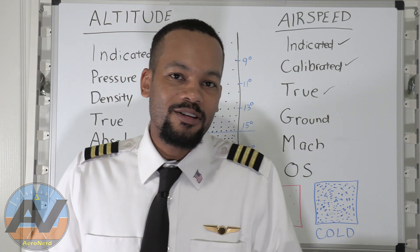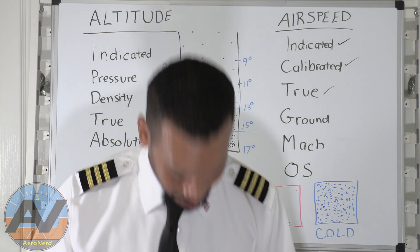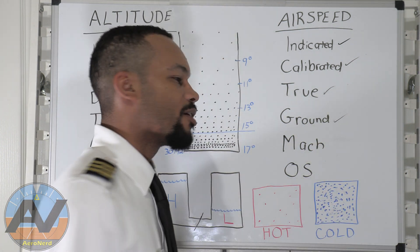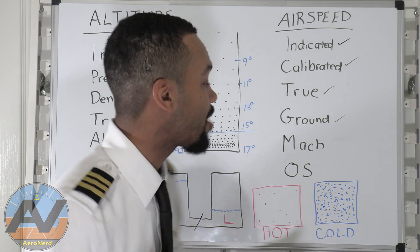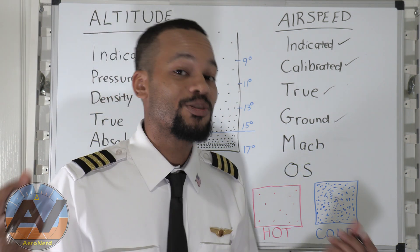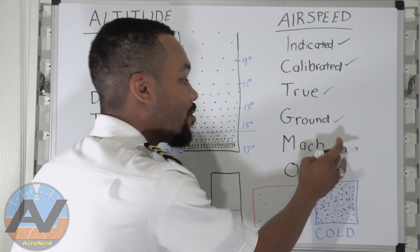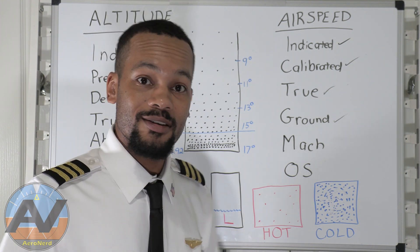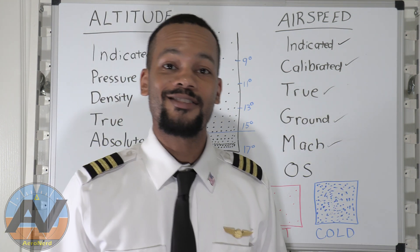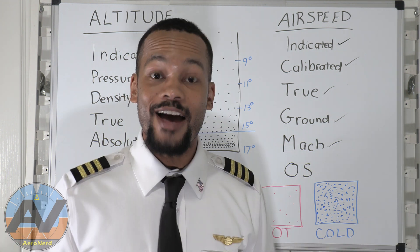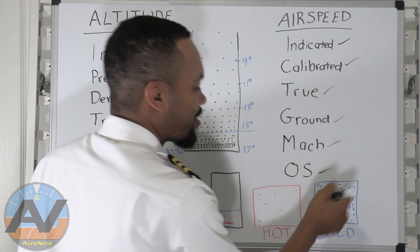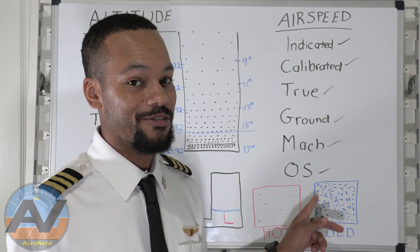Ground speed is literally the easiest to explain — it's the speed at which you're going over the ground. Mach is the speed of sound: Mach 1 is the speed of sound at the proper temperature, and Mach speed does change according to temperature. Mach 2 would be twice the speed of sound. The OS airspeed is the one telling you you're going too fast, too slow, or about to stall — so stay away from that speed.